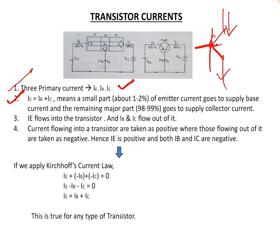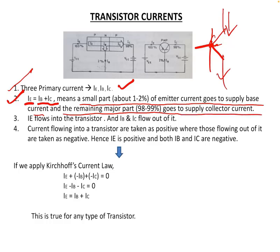IE is equal to IB plus IC — meaning the total emitter current splits into two parts. A small part goes to the base, and the remaining large part — about 99% — goes to the collector current.